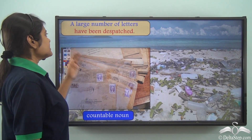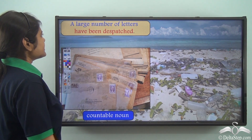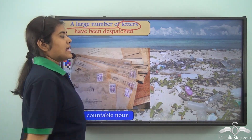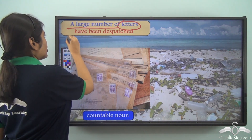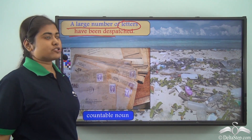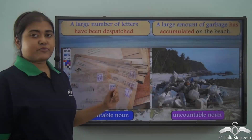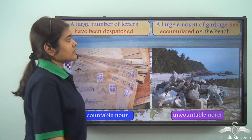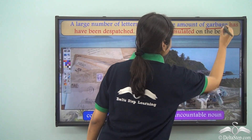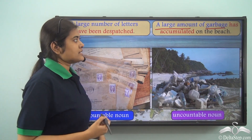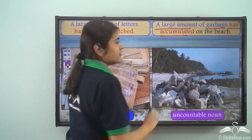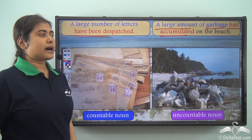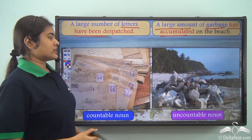'A large number of letters have been dispatched.' Here 'a large number of' denotes a quantity, and the noun 'letters' is countable, so we use the plural verb 'have been dispatched.' But 'A large amount of garbage has accumulated on the beach' — 'a large amount of' is followed by the uncountable noun 'garbage,' so we use the singular verb 'has accumulated.' In all these cases, the verb is determined by the noun — whether it is countable or uncountable.